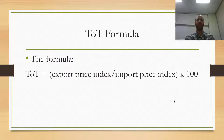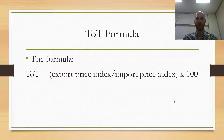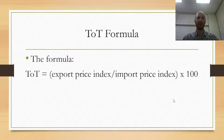The formula for the terms of trade looks at the export price index divided by the import price index times 100. So basically it's the ratio of export prices to import prices for a country.